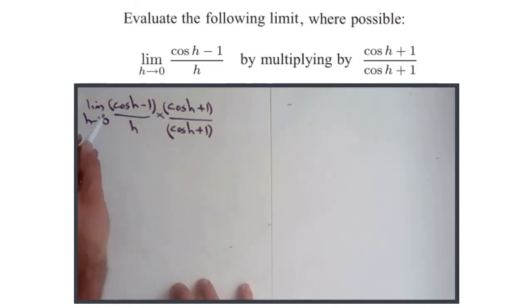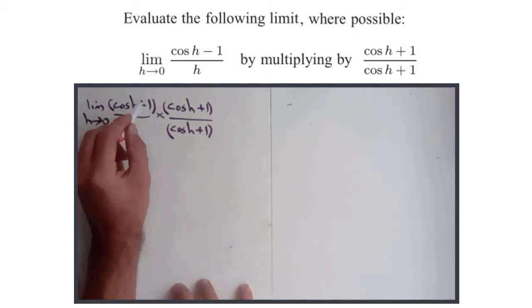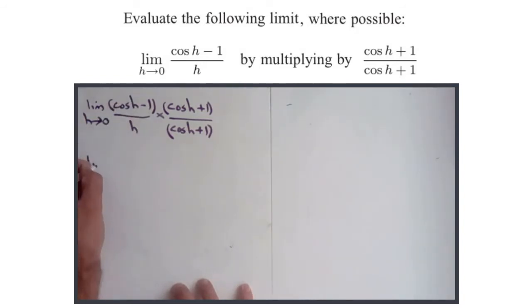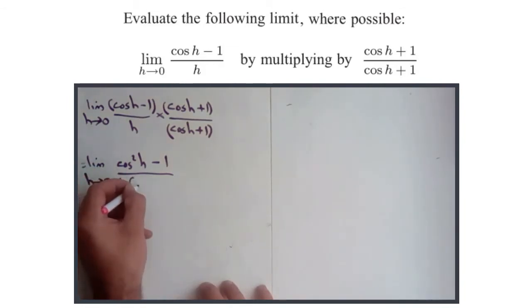Right, so if we look at this, this is a difference of two squares on the top. This is going to be cos squared h minus 1. So that equals the limit as h approaches 0 of cos squared h minus 1. And on the bottom, I'm just going to write those as h times cos h plus 1. There's absolutely no advantage at all in expanding this bracket.